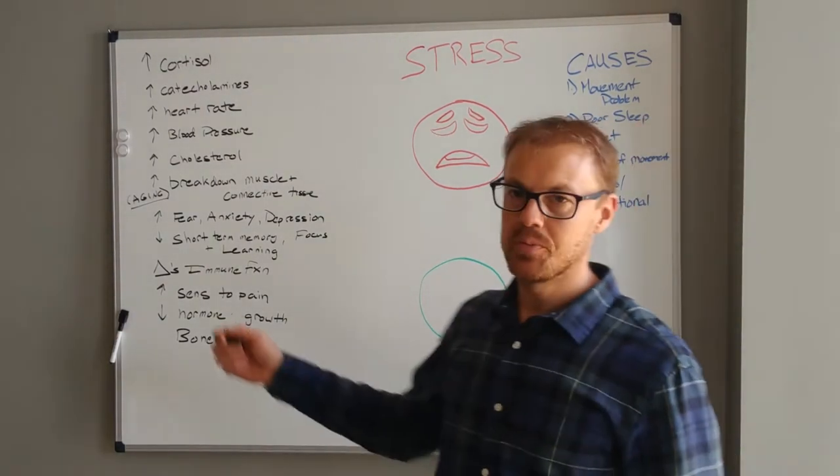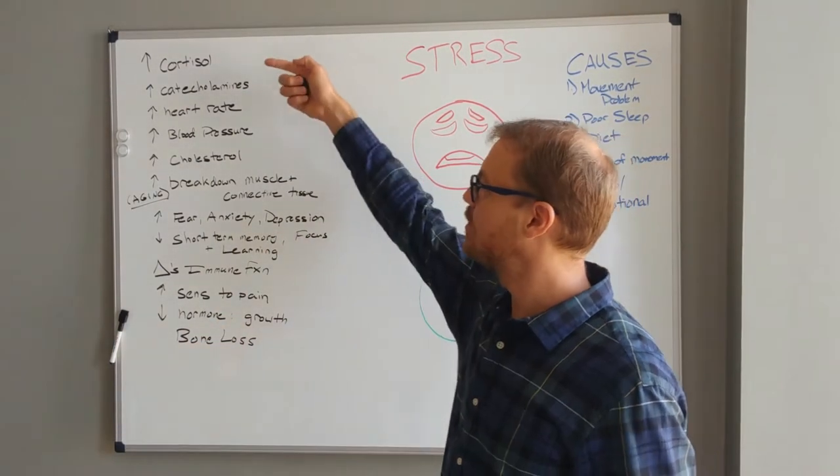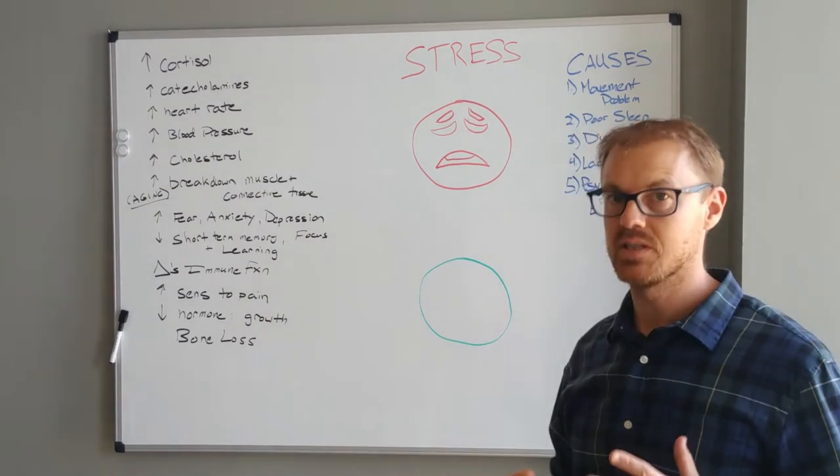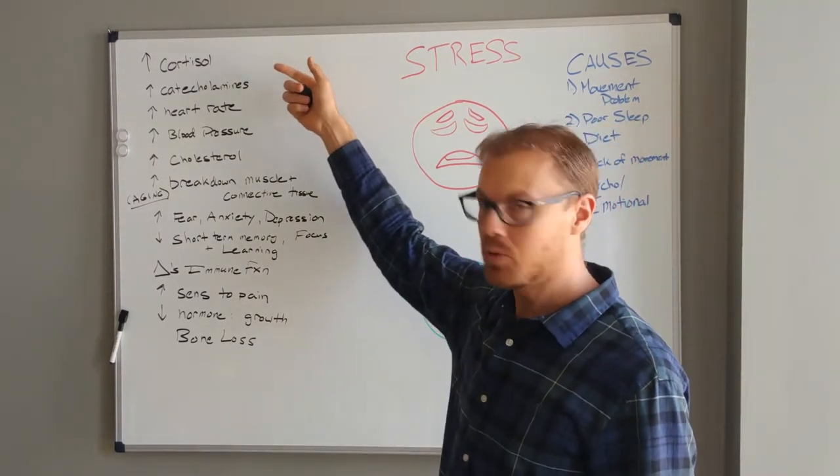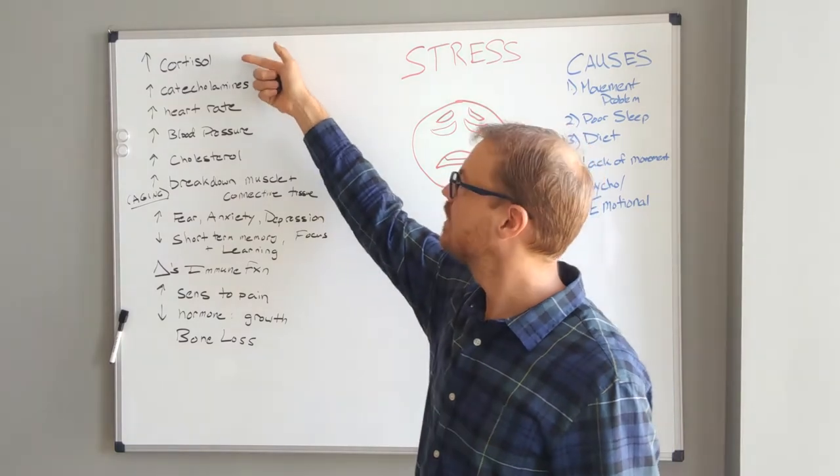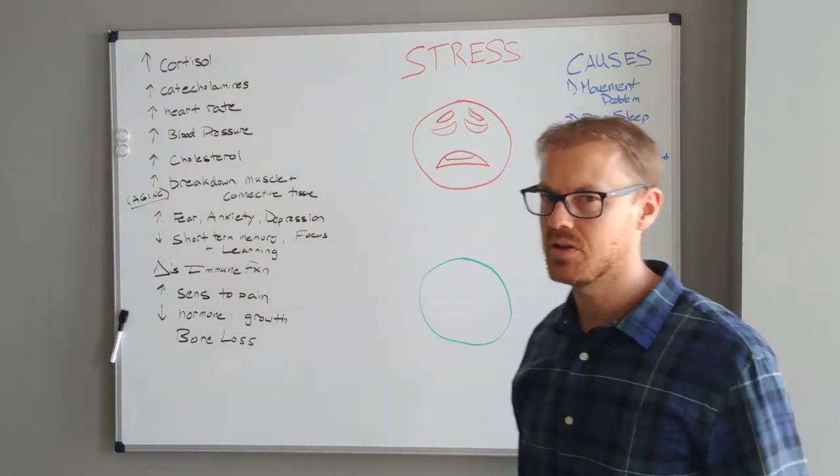So the stress response - here are the things that happen. Initially our nervous system responds and then our hormonal system starts kicking in. We get cortisol and catecholamines. Those are stress hormones.